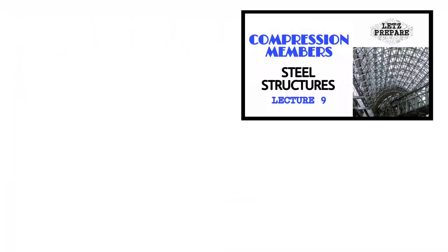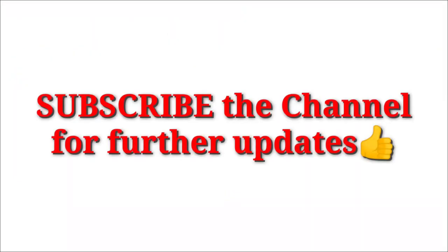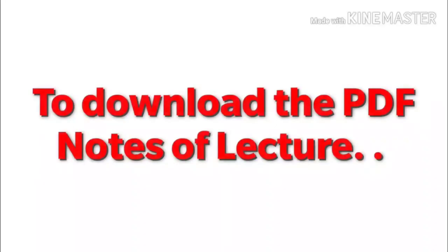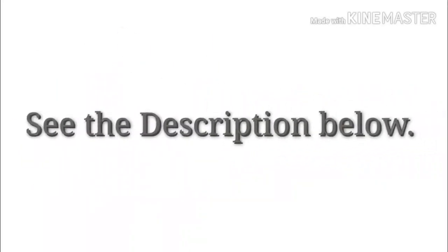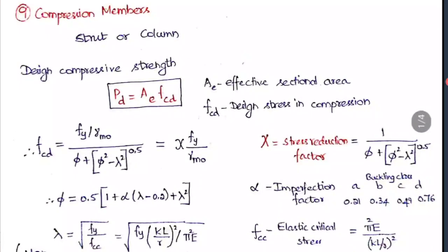Let's prepare on compression members. Compression members are nothing but columns; in steel structures we call them specifically a strut. We are going to see the design compressive strength of a compression member, given as PD = Ae × FCD — that is, effective sectional area multiplied by the design stress in compression.